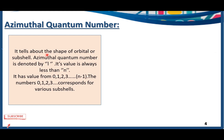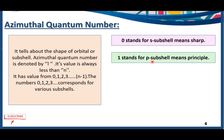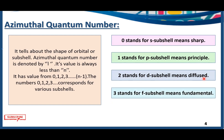Azimuthal quantum number also tells us about the shape of the orbital. Zero stands for the s subshell, meaning 'sharp.' One stands for the p subshell, meaning 'principal.' Two stands for the d subshell, meaning 'diffused.' Three stands for the f subshell, and f means 'fundamental.'